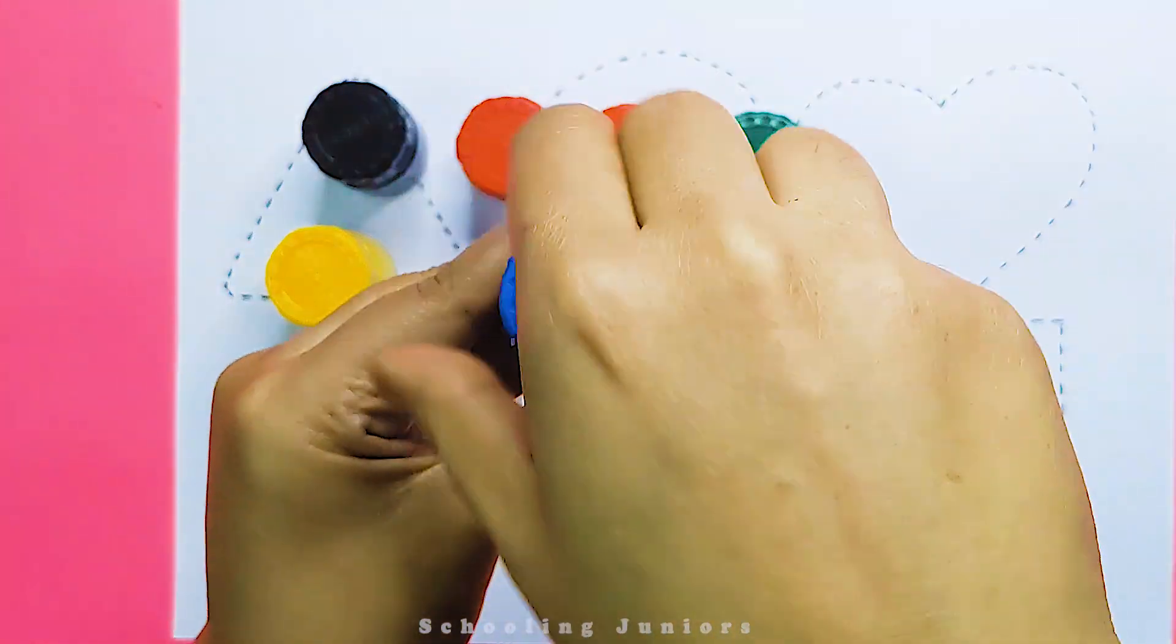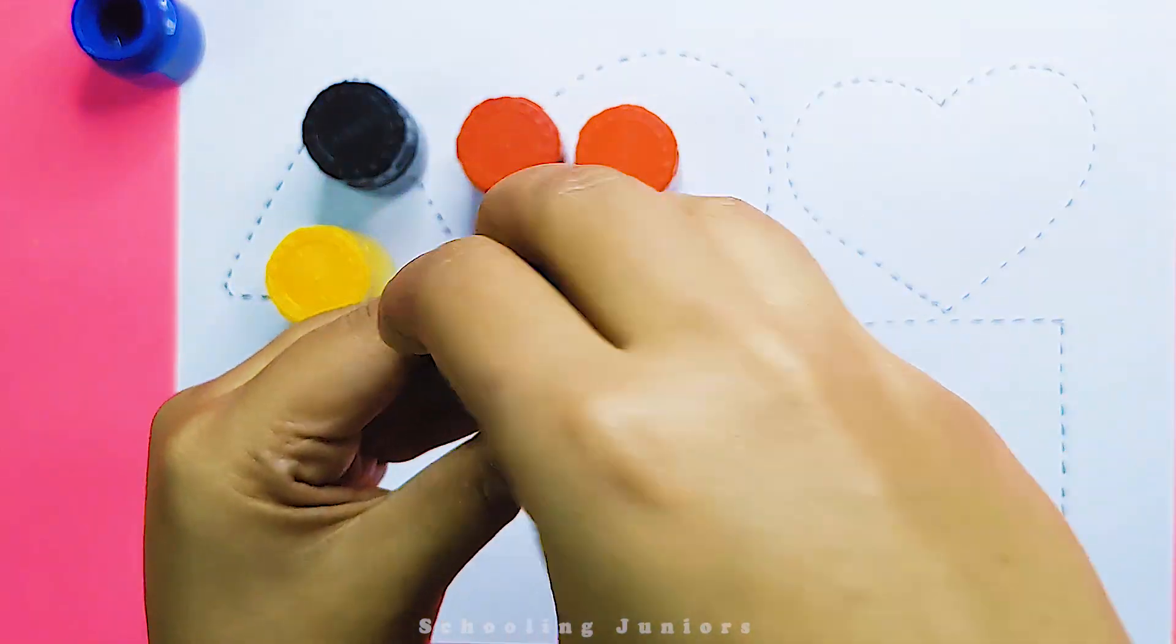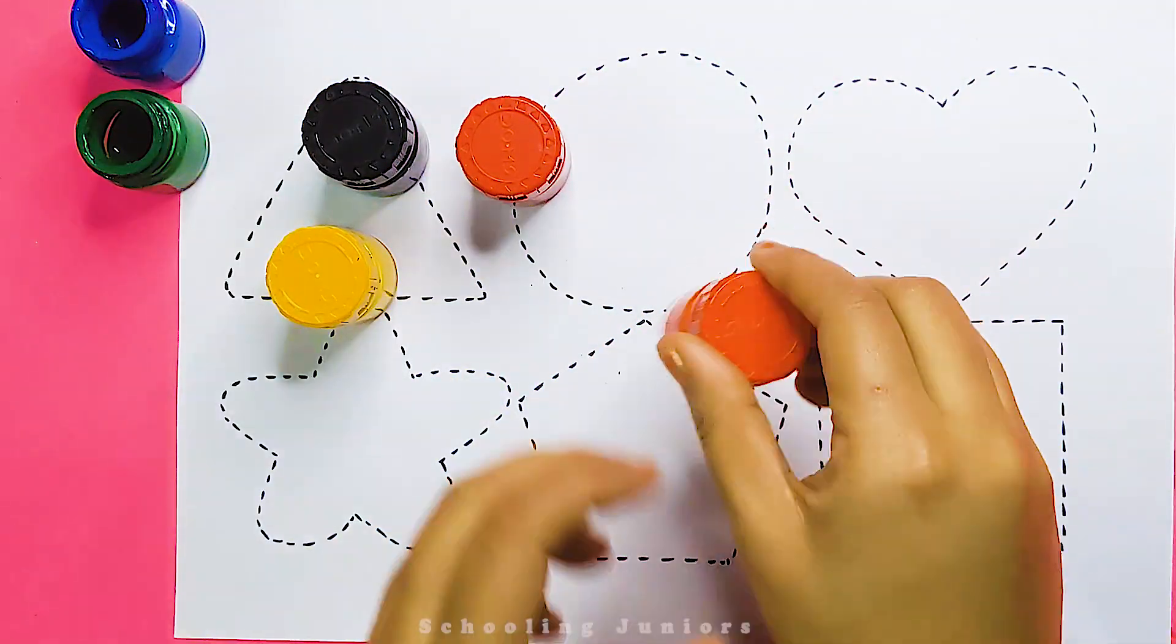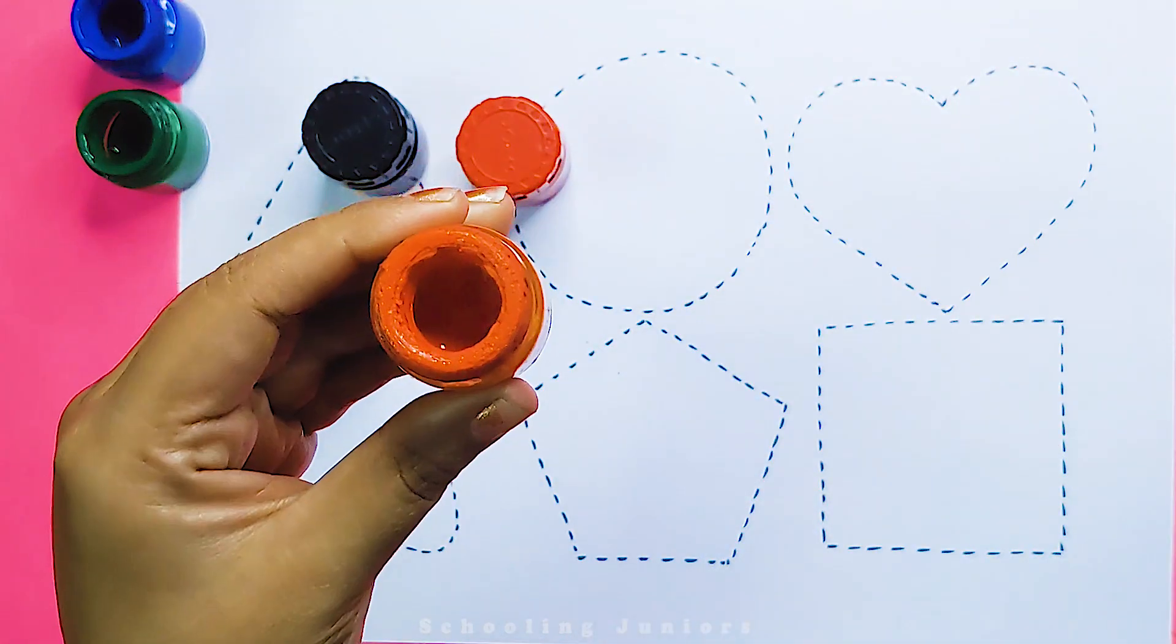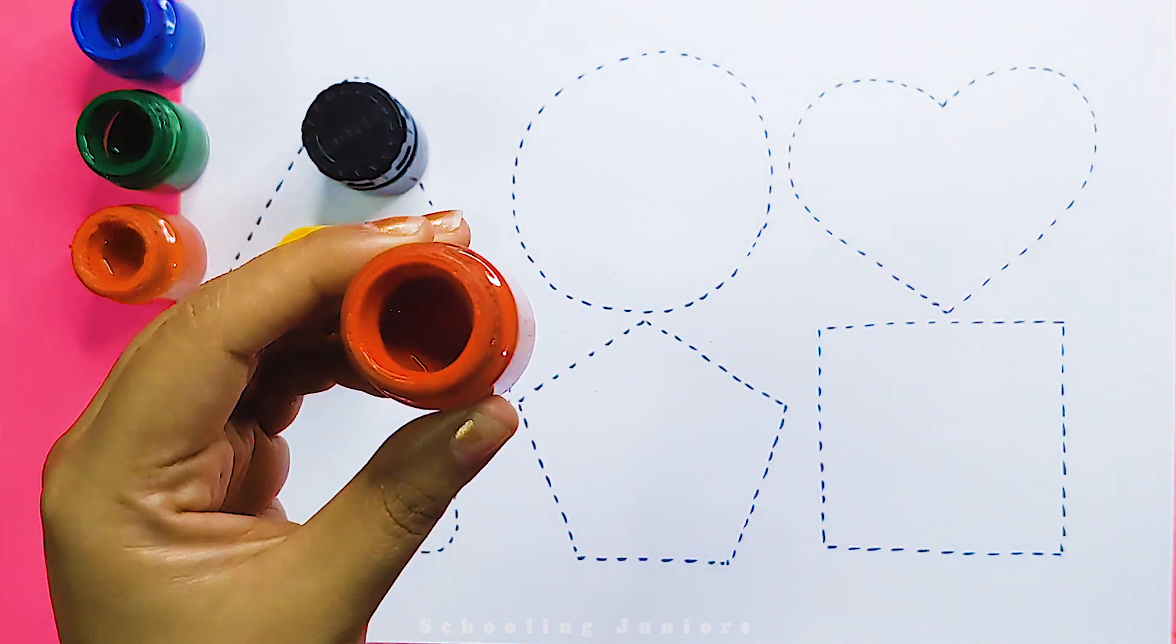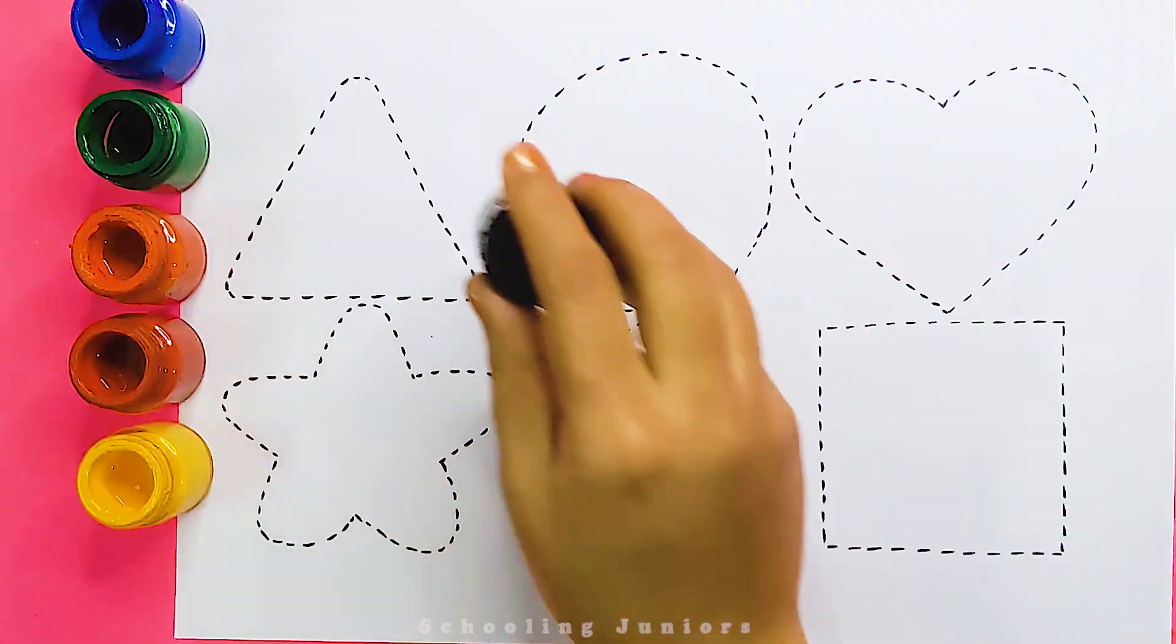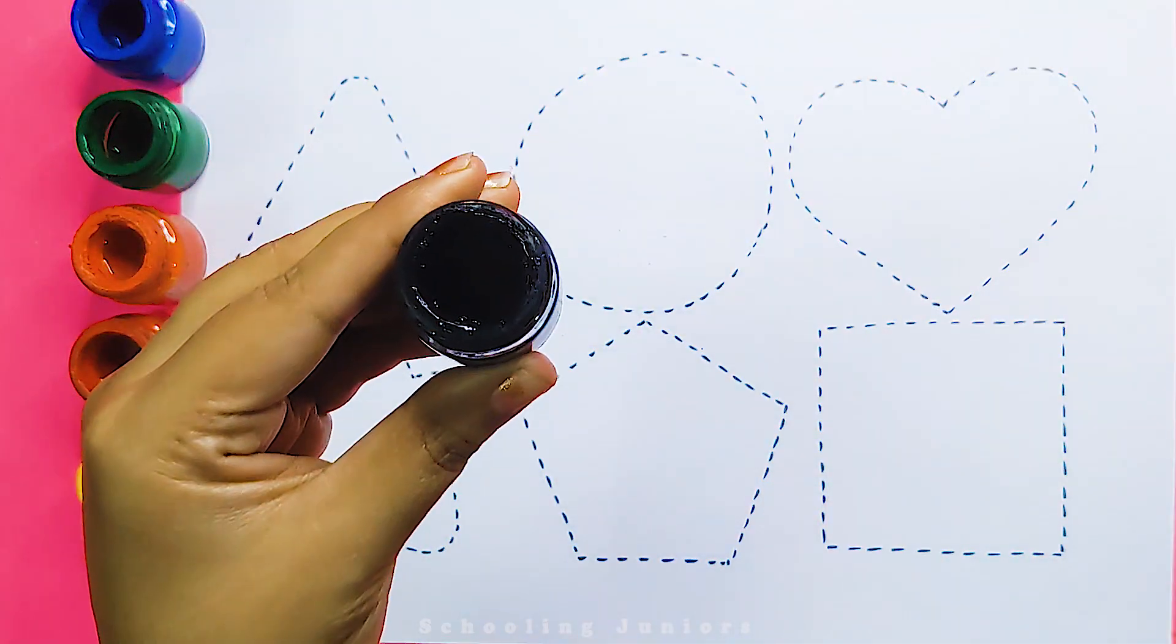This is blue color. This is green color. This is orange color. This is red color. This is yellow color. This is black color.